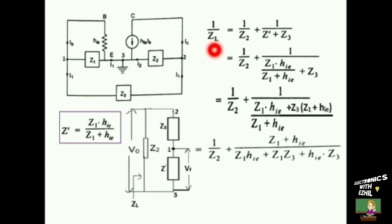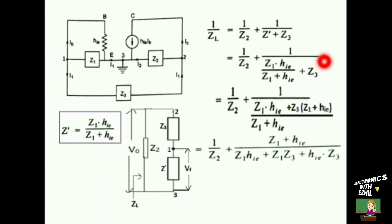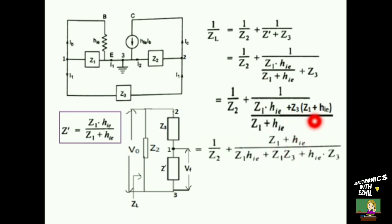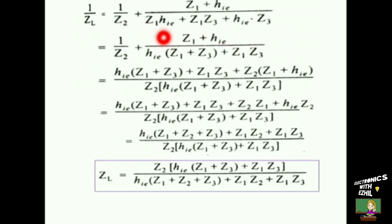Looking from this side, we write: 1/ZL = 1/Z2 + 1/(Z-dash + Z3). Now we replace Z-dash with Z1·hie divided by Z1 plus hie, and take the LCM. This becomes: Z1·hie + Z3·(Z1 + hie) divided by Z1 plus hie. Bringing Z3 inside gives Z3·Z1 + Z3·hie, and taking hie commonly out between the first and last terms gives hie·(Z1 + Z3) plus the remaining term.